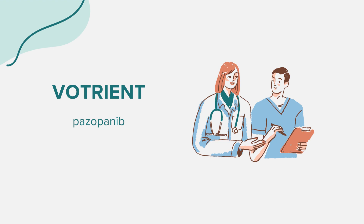Before starting Votrient, inform your doctor if you have had liver disease; heart disease, heart rhythm disorder, or long QT syndrome; high blood pressure; a blood clot or stroke; a thyroid disorder; headaches, seizures, or vision problems; a perforation in your stomach or intestines; a fistula within your stomach or intestines; stomach or intestinal bleeding; or surgery within the past 7 days.